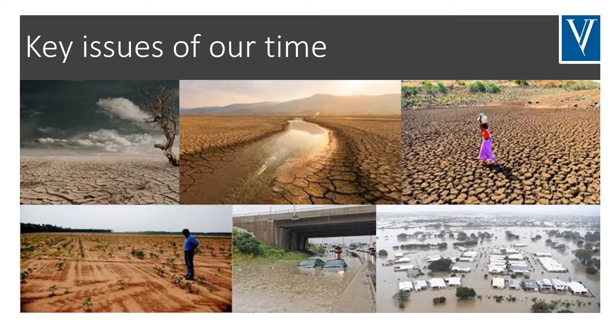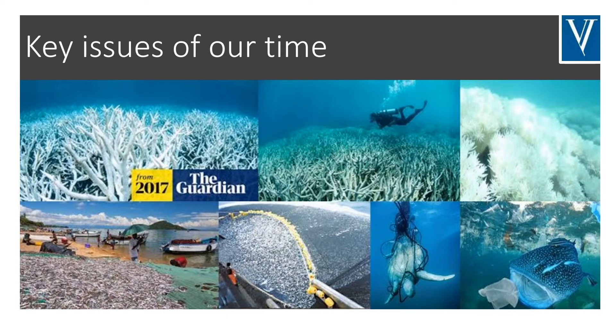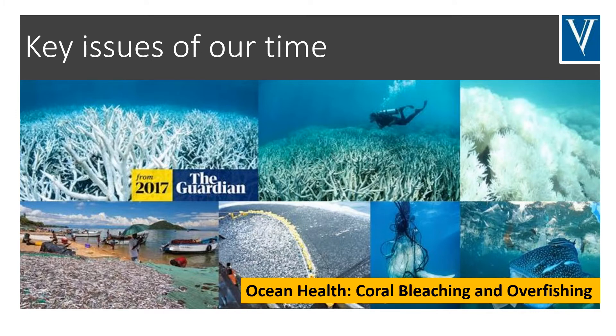Here on the second slide, you can see some more images and these represent droughts and flooding. Both droughts and flooding can be consequences of global climate change, so you can see how some issues are interlinked. Here we have issues to do with the health of our oceans — we can see bleached corals, plastics in the ocean, and the effects of overfishing.